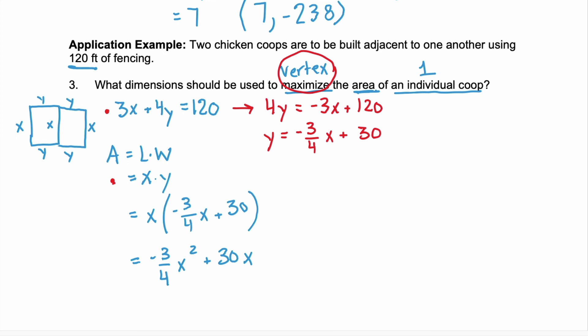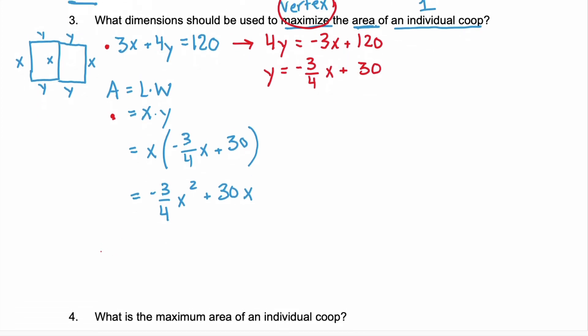And we can use that vertex form we just used, which is negative b over 2a. So here, negative b, b is 30, over 2 times a, which is negative 3 fourths. Simplify. We have negative 30 over negative 6 fourths. Those negatives cancel. So we have 30 over, and 6 fourths simplifies, 3 halves.